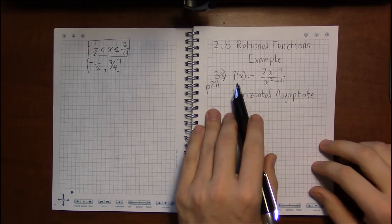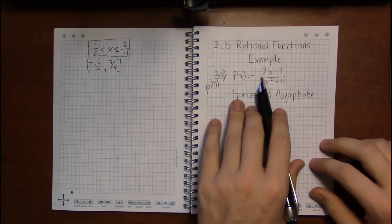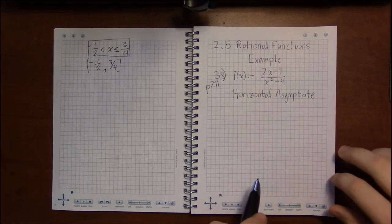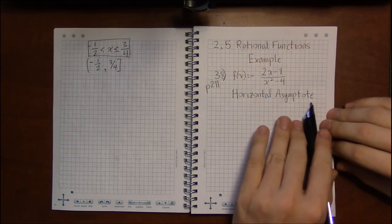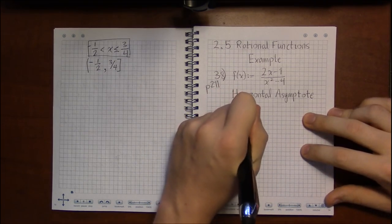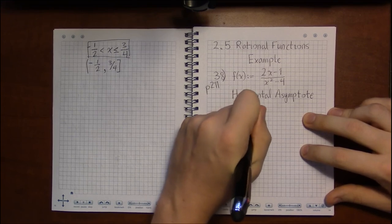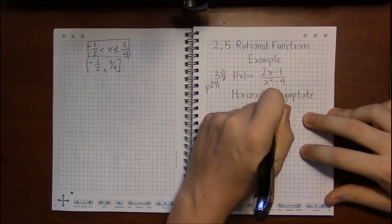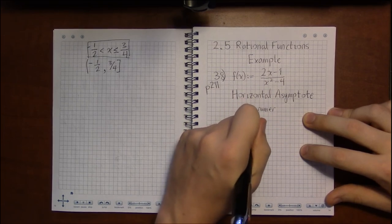The first one they have for 38 is 2x minus 1 divided by x squared minus 4. Now horizontal asymptotes are the tricky ones because they deal with the degree of the numerator as compared to the degree of the denominator.